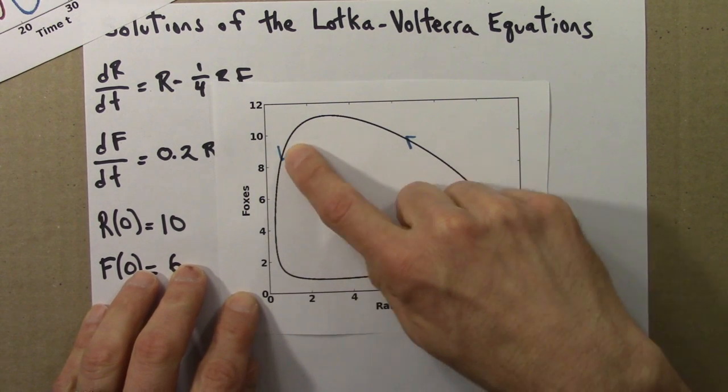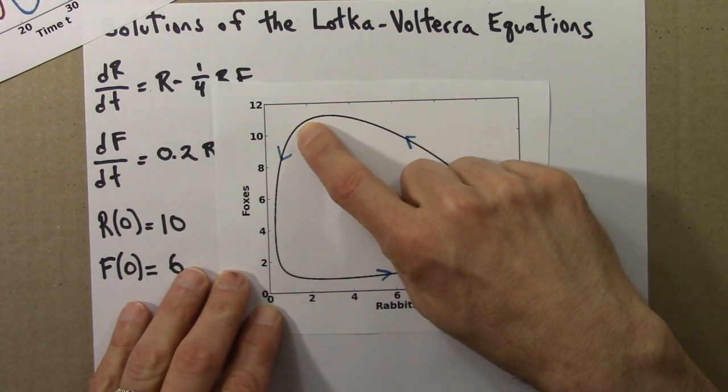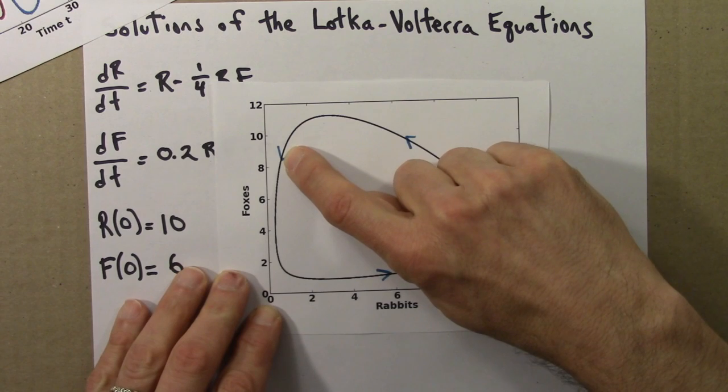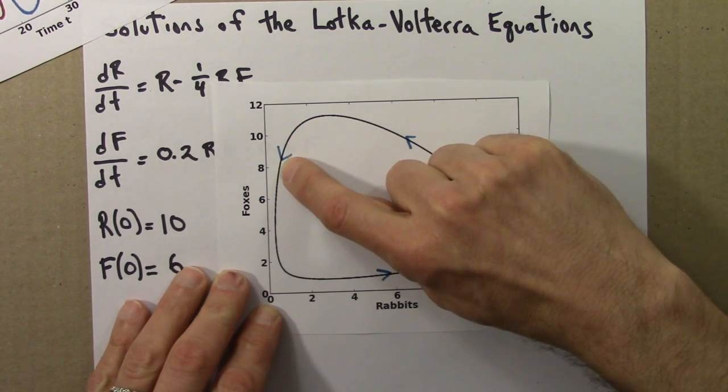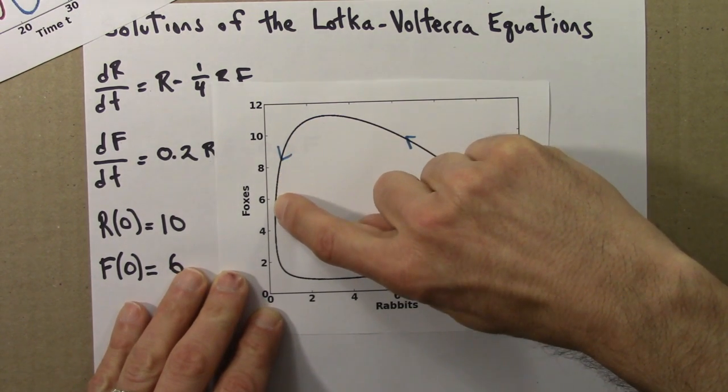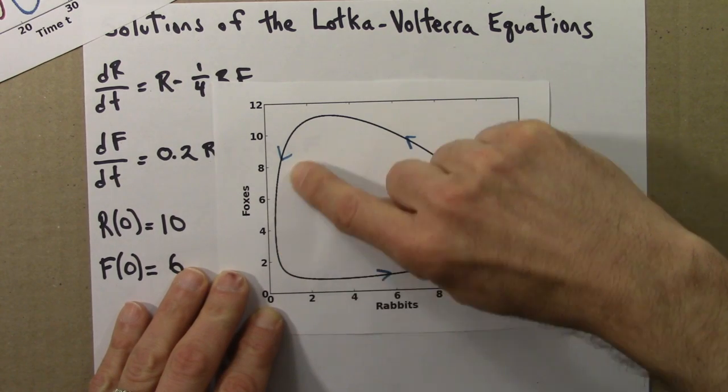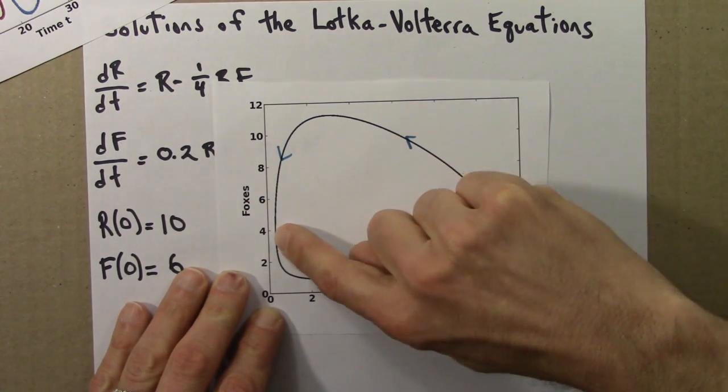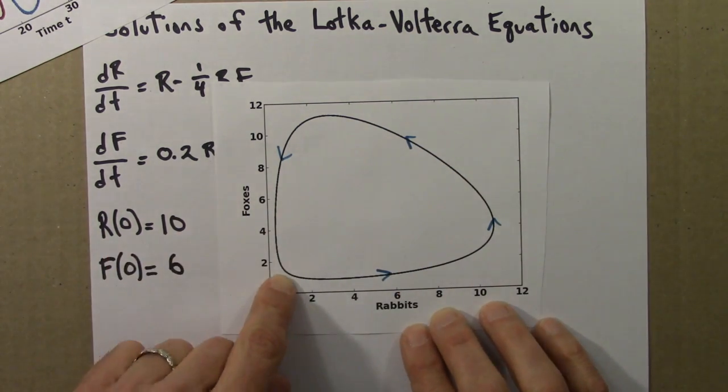So in this segment of the graph, the fox population is decreasing. The rabbit population decreases a little more. Then we have this sharp drop in the fox population. Rabbits are more or less constant. And then we begin again.